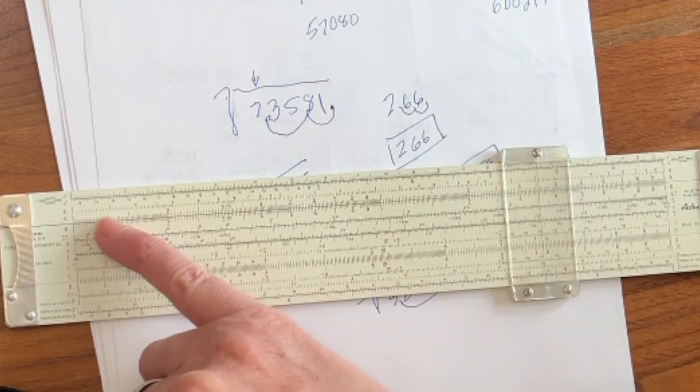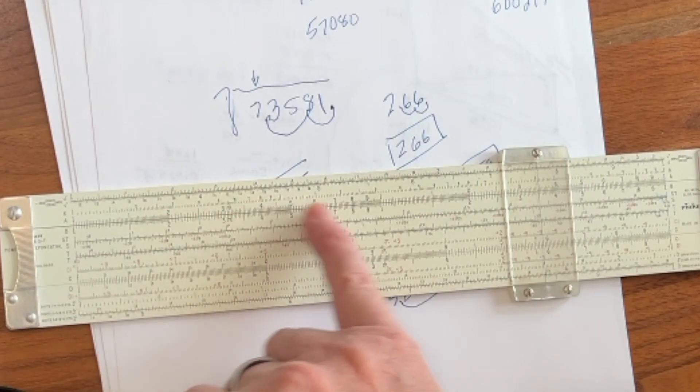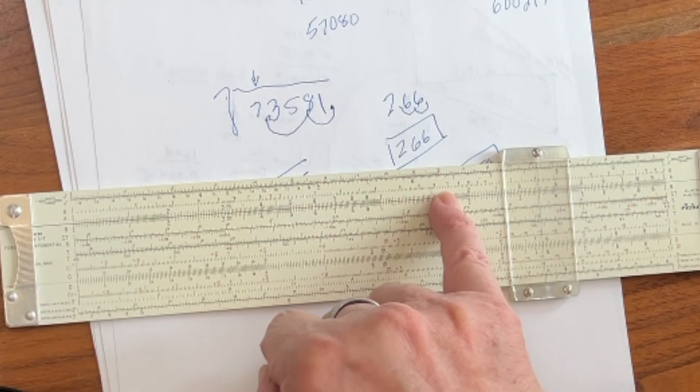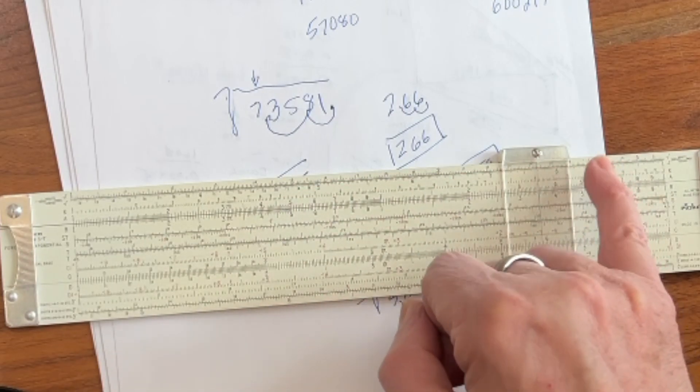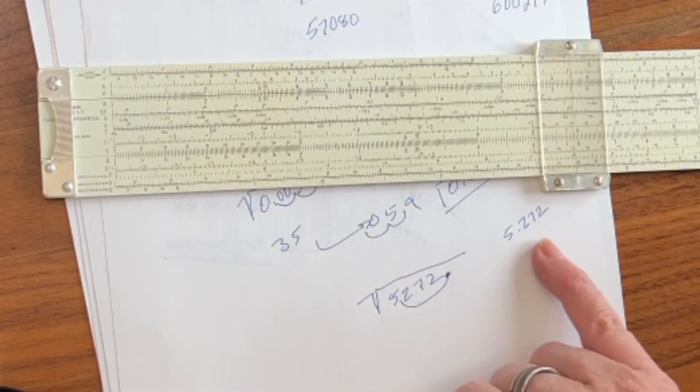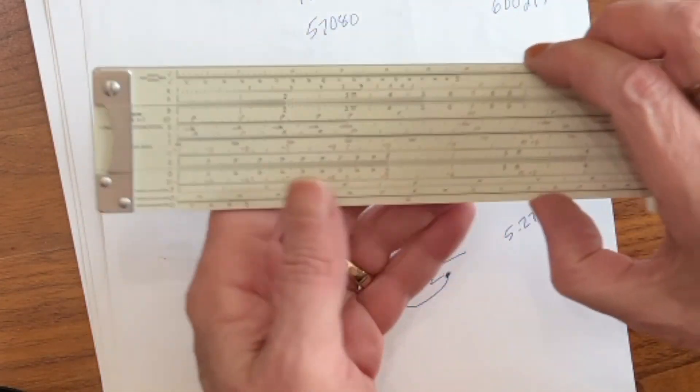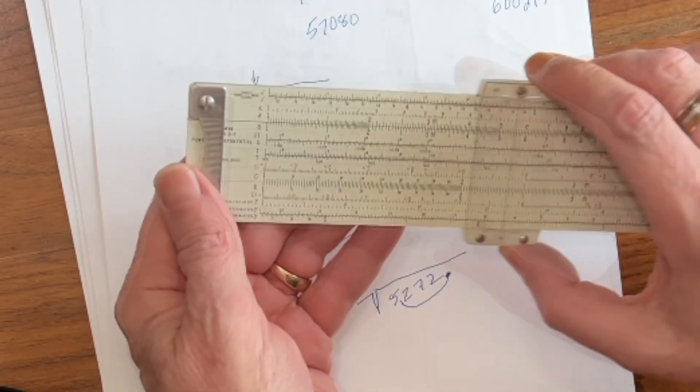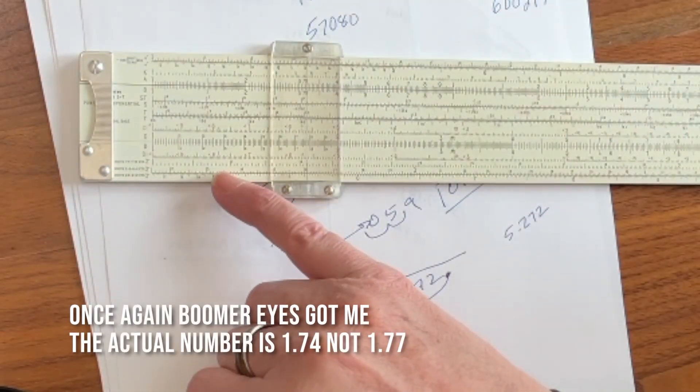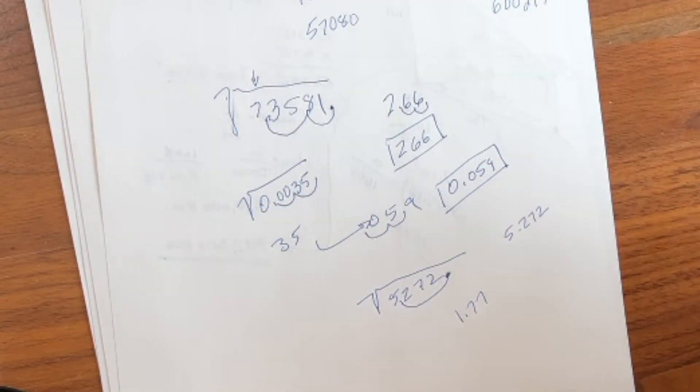On the K scale, the extreme left scale is for numbers from one to 10. The middle scale is for 10 to a hundred. And the right scale is for 100 to a thousand. So 5.72 is going to be in the extreme left scale. We just go to 5.72. There's five, seven. And we read straight down. We get 1.77, it looks like.